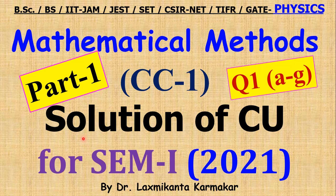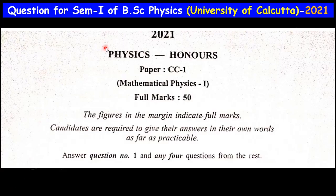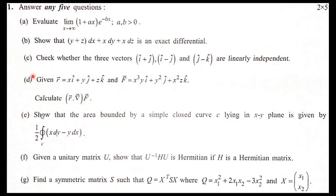Hello, welcome everyone. In this video I want to discuss the CC1 paper of Physics Honours under the University of Calcutta, year 2021. This is part one, and in this part we will discuss question number one, parts a to g. You can see this is the question of University of Calcutta 2021 Physics Honours first semester CC1 paper — this is Mathematical Physics one.